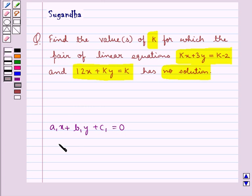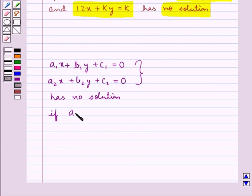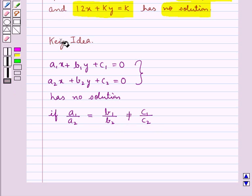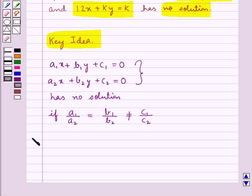Consider the linear equations a1x plus b1y plus c1 equal to 0 and a2x plus b2y plus c2 equal to 0. Then this pair of linear equations has no solution if we have a1 upon a2 is equal to b1 upon b2 is not equal to c1 upon c2. This is the key idea that we use for this question. Let's proceed with the solution now.